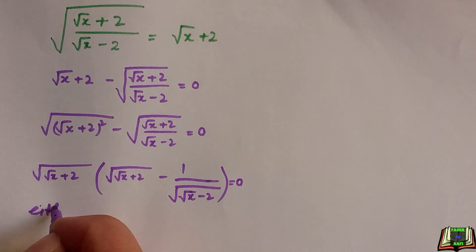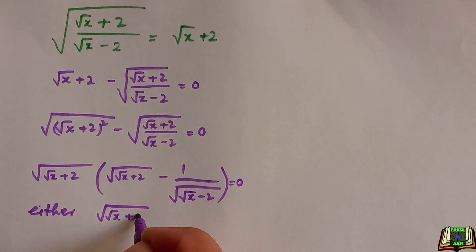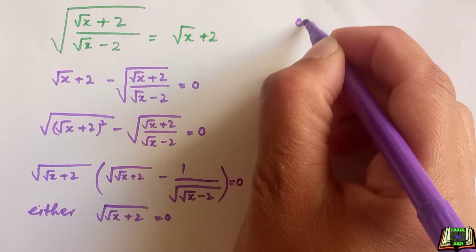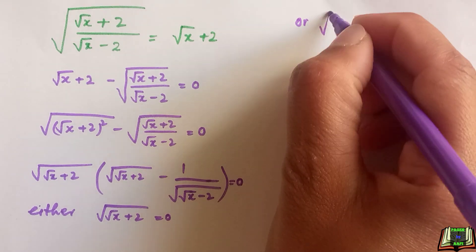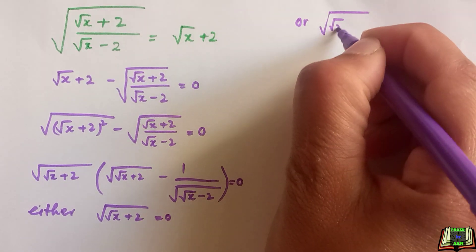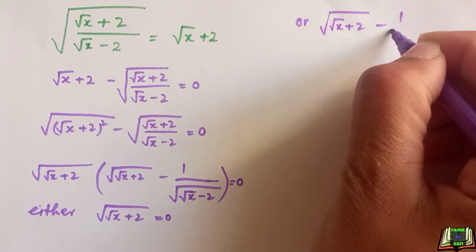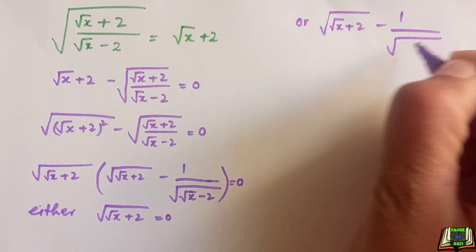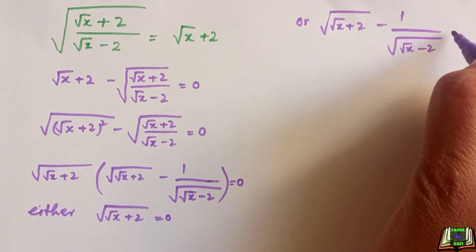So we have two cases: either the square root of root(x+2) equals zero, or the square root of root(x+2) minus one divided by the square root of root(x-2) equals zero.